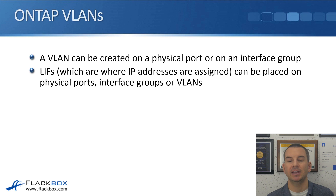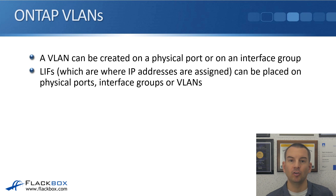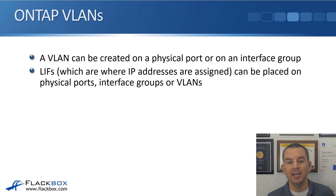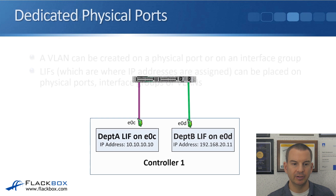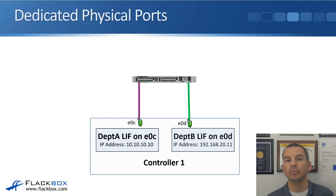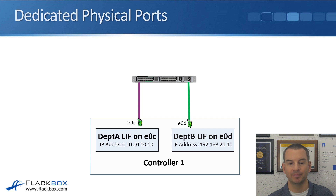A VLAN can be created on a physical port or on an interface group. Logical interfaces — that's where the IP addresses are assigned — can be placed on physical ports, interface groups, or on VLANs. I'll talk more about logical interfaces in a later lecture in this section.